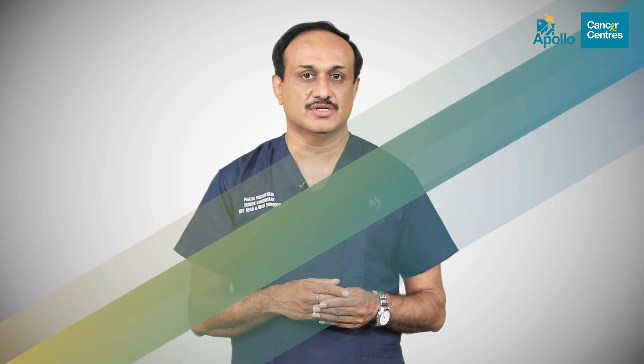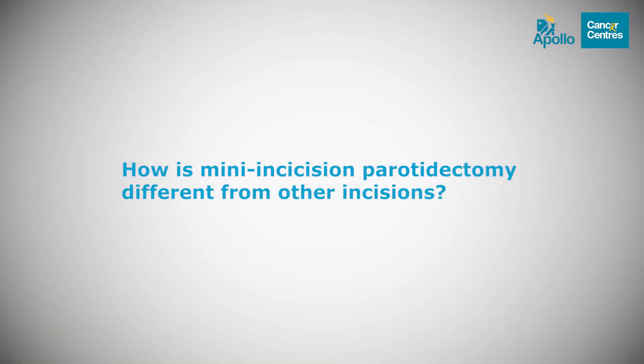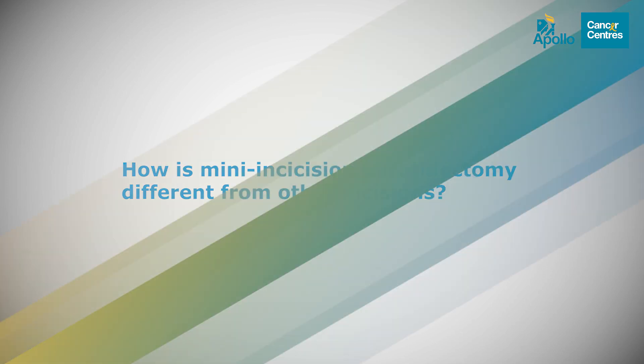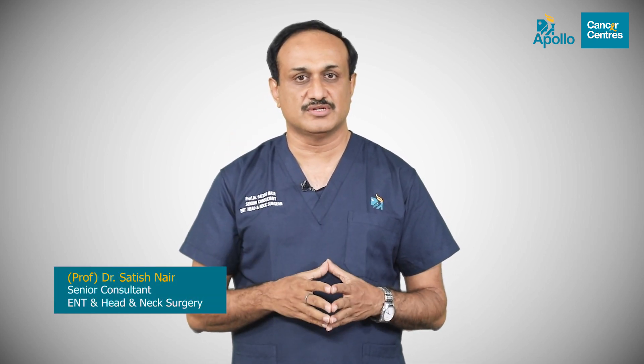Conventionally, parotid surgery is performed with an incision that starts from in front of the ear and goes down into the neck. There are various modifications to this large incision, and many doctors have worked to reduce its size.